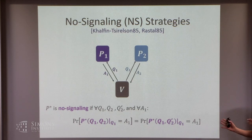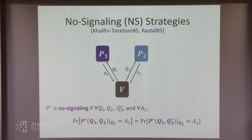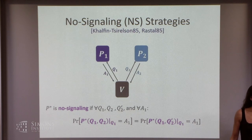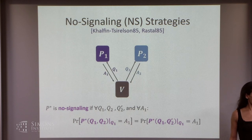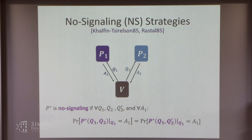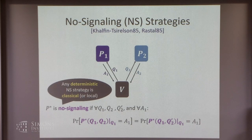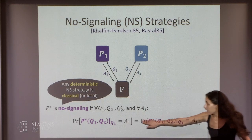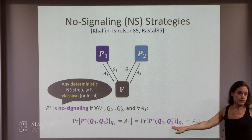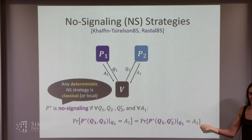If you stare at this, you may think: I'm giving him both queries but not allowing him to use the other query, so isn't it the same as being local? Indeed, if you think of the cheating prover as being deterministic — which is how we cryptographers tend to think, using the non-uniform model — then you're right. A no-signaling strategy and being classical is the same for deterministic provers. The answer would have to be the same regardless.